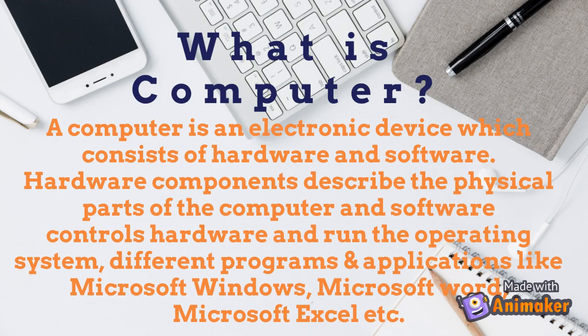Now let's see the description of a computer that you will write in your exam. A simple definition: a computer is an electronic device which consists of hardware and software. Hardware components are the physical parts of the computer, while software controls the hardware and runs the operating system. Just keep in mind that hardware is the external parts and software is the internal parts. We will discuss software and the operating system later, but for now focus on this definition.